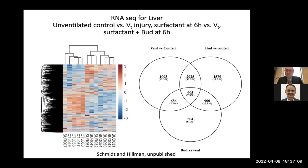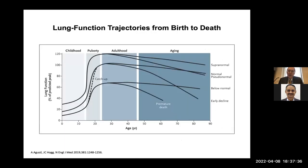As a cautionary note, our published heat diagrams of RNA from the liver of preterm lambs show that when you use any steroid, a large number of genes are expressed in the liver, brain, and gut because of the steroid. This is important context for understanding the systemic effects of these therapies.